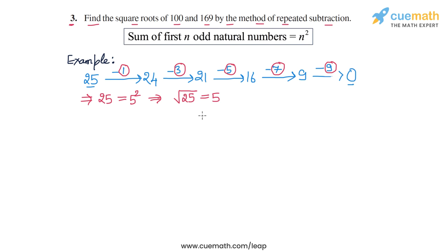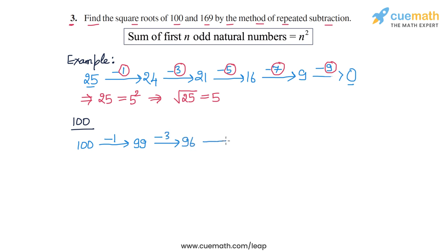Now let's apply this method to find the square roots of 100 and 169. Starting with 100, we subtract 1 — that gives us 99. Then we subtract 3, that gives us 96. Then we subtract 5, that gives us 91. Then we subtract 7, that gives us 84. Then we subtract 9, that gives us 75. Then we subtract 11, and that gives us 64.